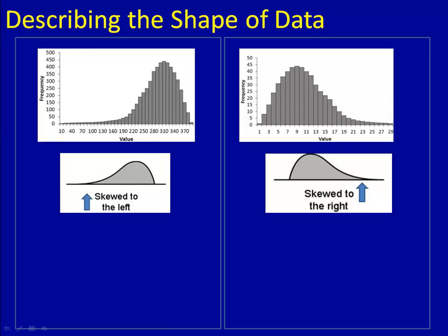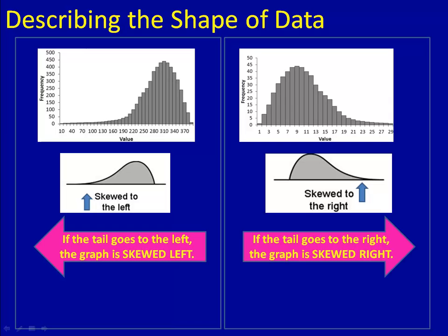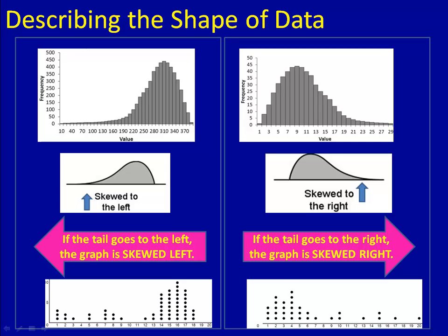So here's what you need to know. If there's a small tail going to the left, we say it's skewed left. If there's a small tail going to the right, we say that it's skewed right. The same is true for dot plots. A dot plot can be considered skewed left or skewed right.